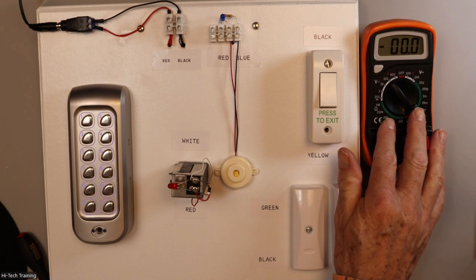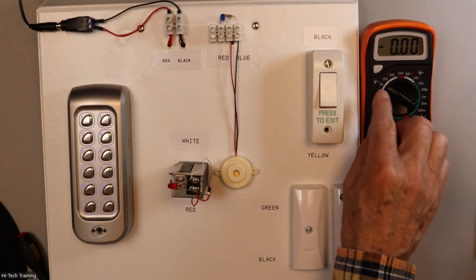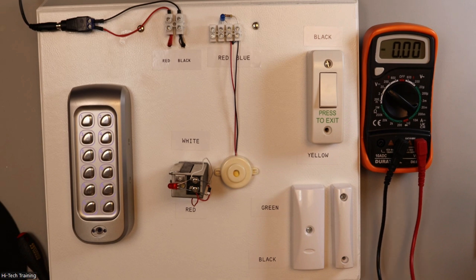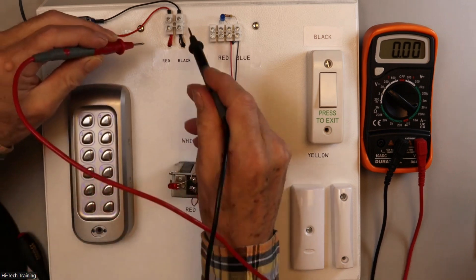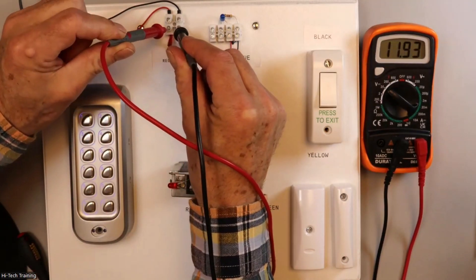So we've got a meter here. We're going to put the meter on 20 volts DC. First of all, we're going to check and see, do we have our 12 volts coming in? So we're going to check for our 12 volts supply. Hopefully we have 12 volts here. 11.92, which is quite good. That's our supply.